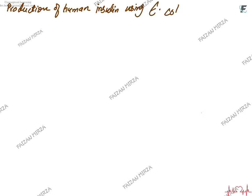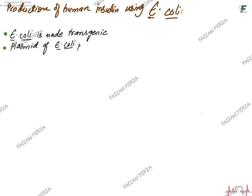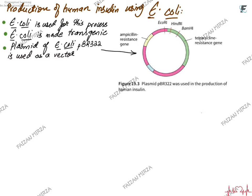Now let's discuss how human insulin can be produced using genetic technology. The human insulin gene is present in the pancreas of a human individual. Using genetic technology, it was initially produced using E. coli bacteria. The plasmid of E. coli — called PBR322 — is used as a vector. This plasmid has a tetracycline-resistant gene, an ampicillin-resistant gene, and restriction sites where enzymes like EcoR1 and BamH1 can cut.